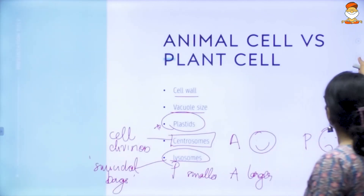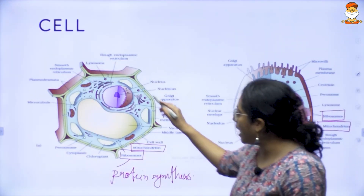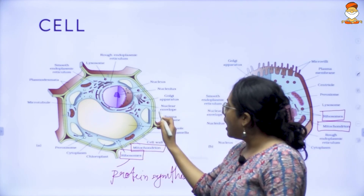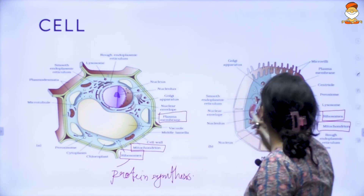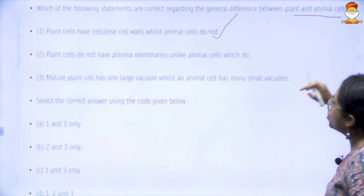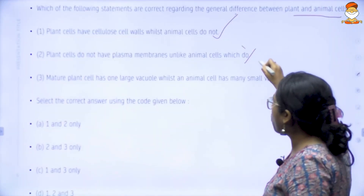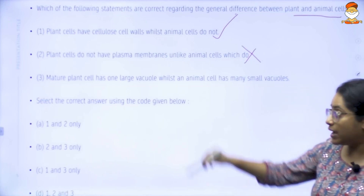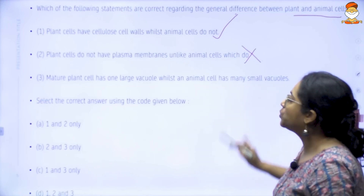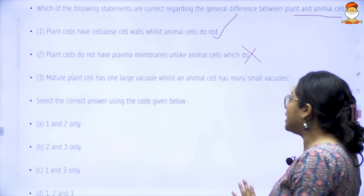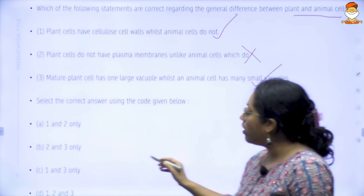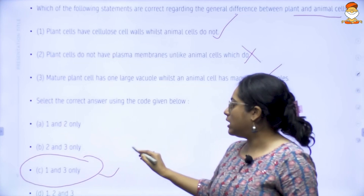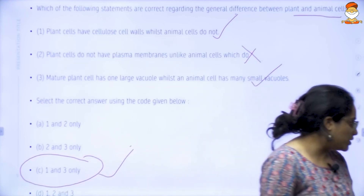But nowhere did I say that plant cells do not have a plasma membrane unlike animal cells. Look at the plant cell — it has a cell wall and then it also has a plasma membrane. So that statement is wrong. Finally, the third statement — that a mature plant cell has one large vacuole whilst an animal cell has many — that is also correct. So C1 and C3 are the correct options.